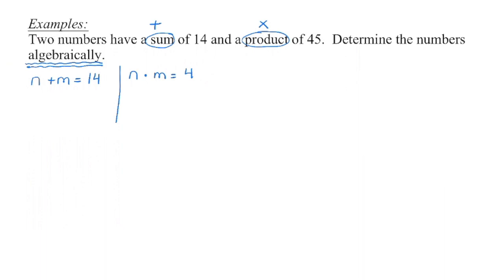What we're trying to get at is can we use an algebraic process to generate those values. First thing we know is that sum is addition and product is multiplication. I'm going to set this up. I don't know what the values of those numbers are, so I'm going to use variables to represent them. So my number plus another number is 14, and my number times another number is 45.